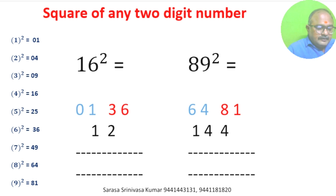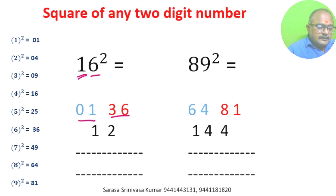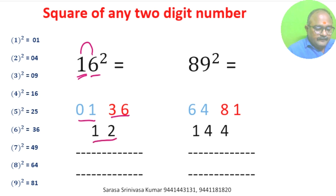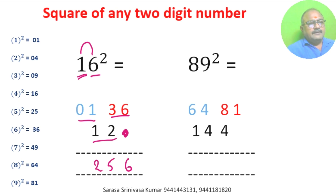16 square: square of 1 is 01, square of 6 is 36. 1 into 6 is 6, 6 into 2 is 12. We don't write anything in units place. 6, 3 plus 2 is 5, 1 plus 1 is 2. 16 square is 256.